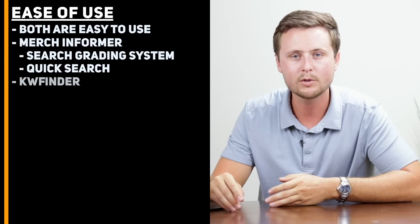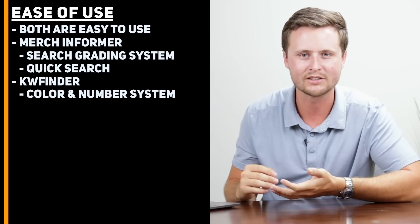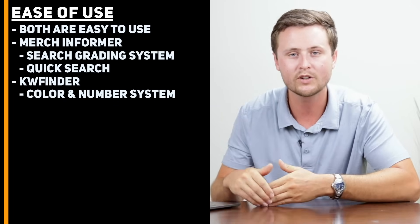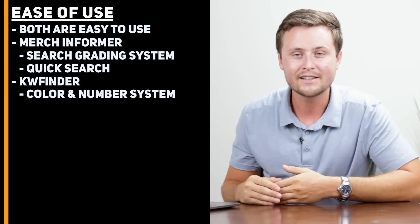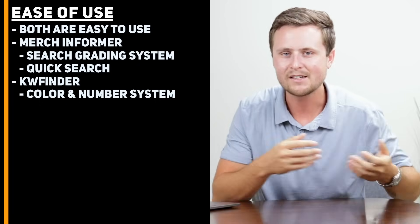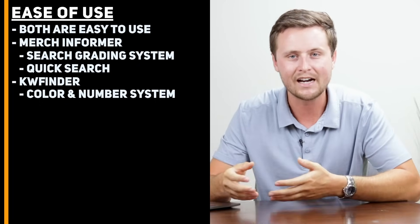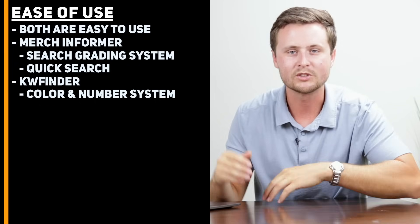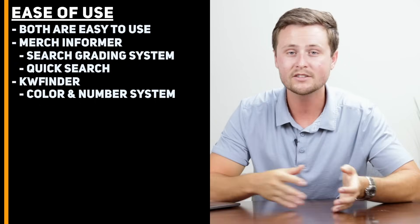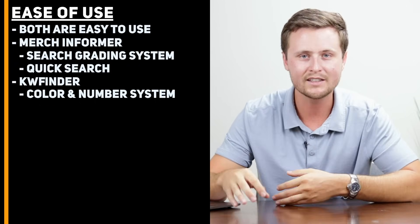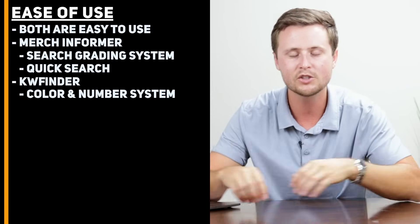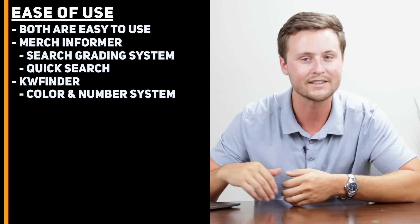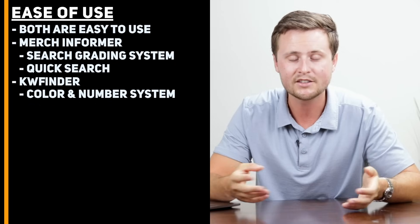But the reason that I like Merch Informer is you quickly type in your niche and you can see your letter grade and know right away, is it an A, is it somewhere in the middle, or is it an F? Moving over to KW Finder, they use a color system with a number system. So essentially it's going to go from green to red. If it is bright green, then that means it is good, essentially an A. If you get a red, that means that it is not good, and it is essentially an F. Also they put a number score with it from 0 to 100. So basically if you're using KW Finder, just look at the colors and you'll be able to check that niche and you'll be able to see is it green or is it red. So both of these are very easy to use and you can efficiently find information on niches.